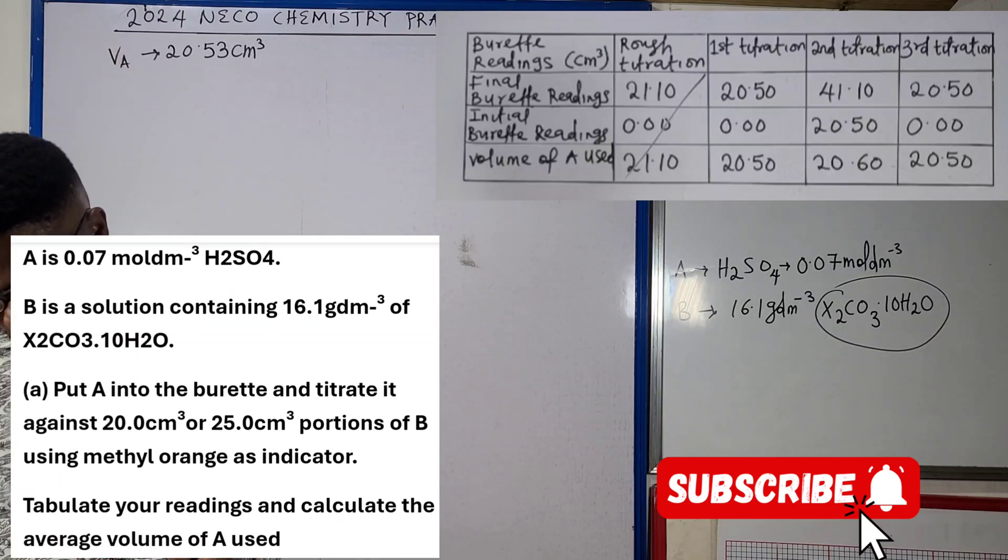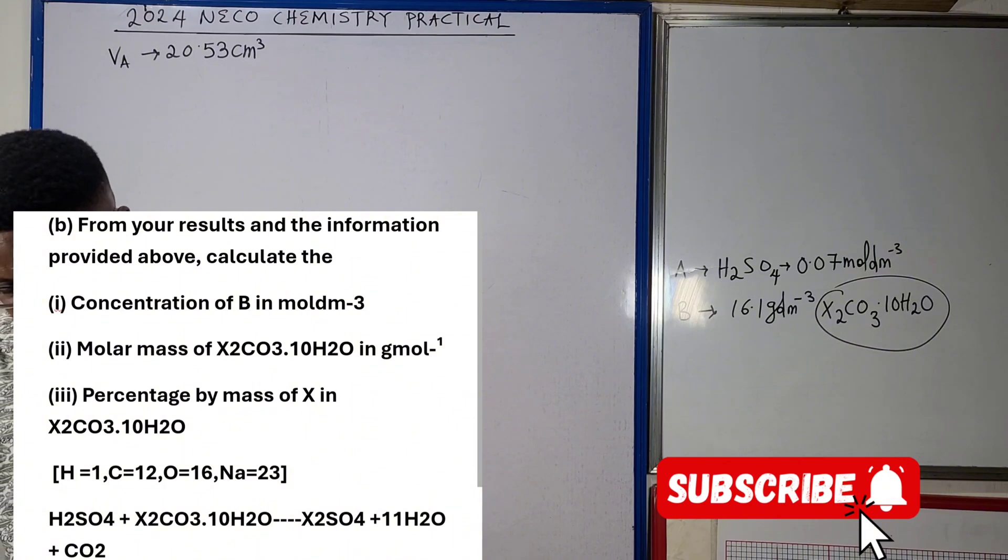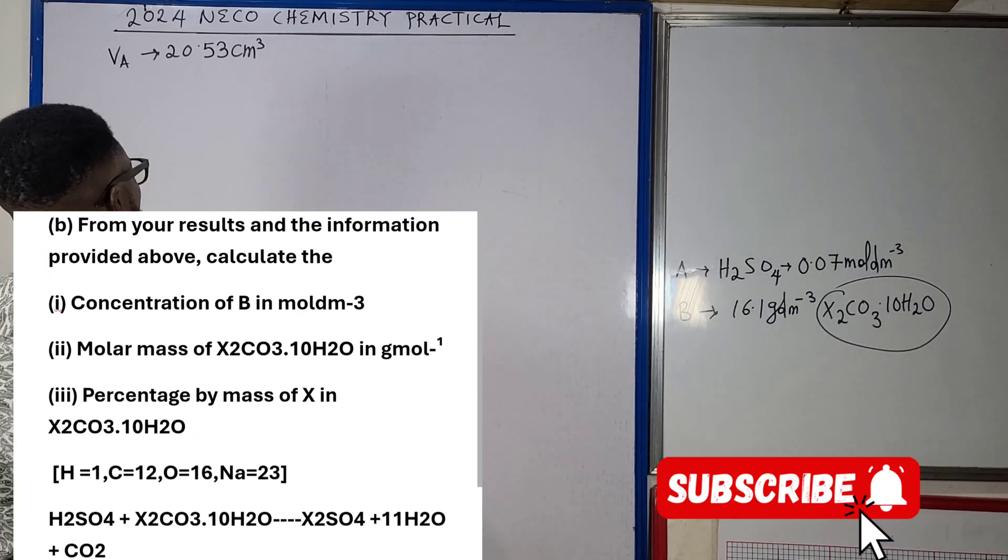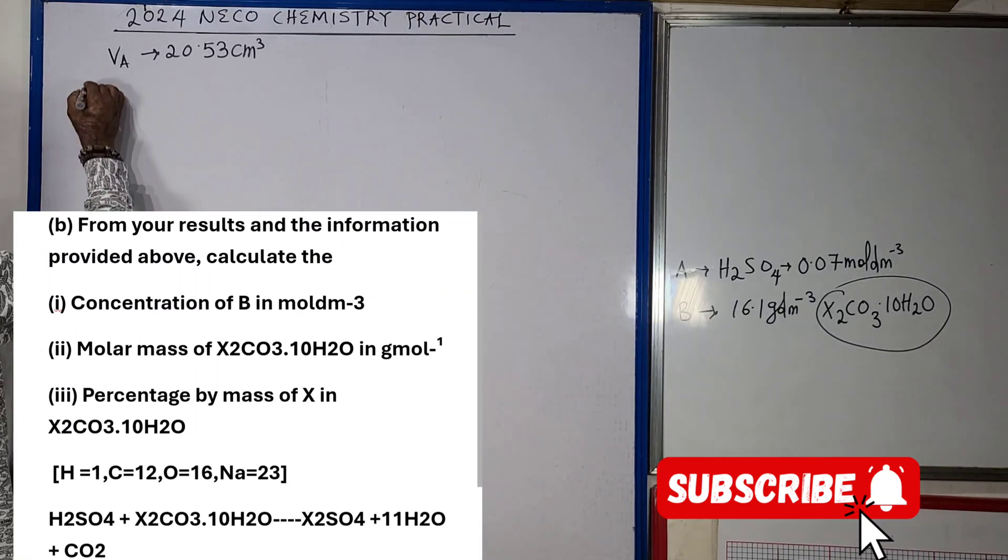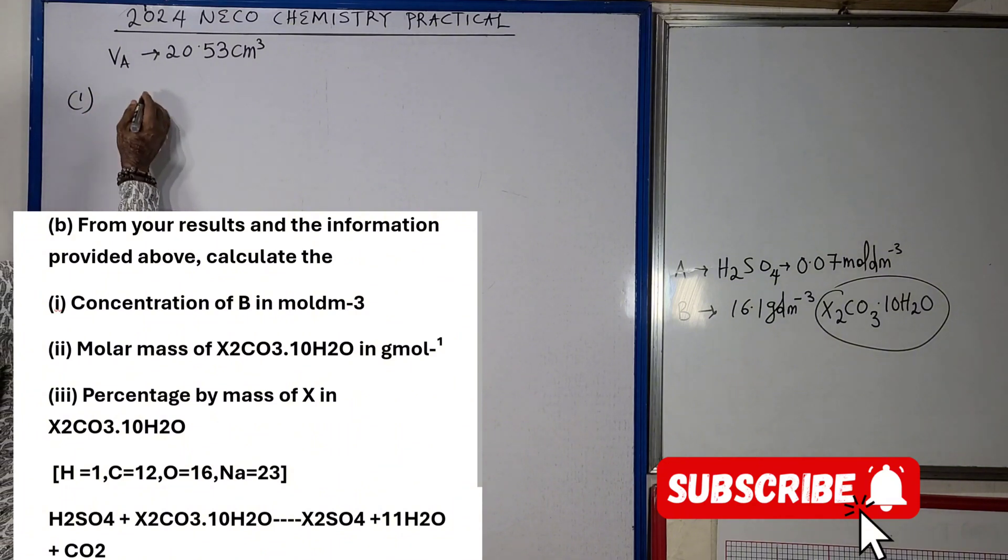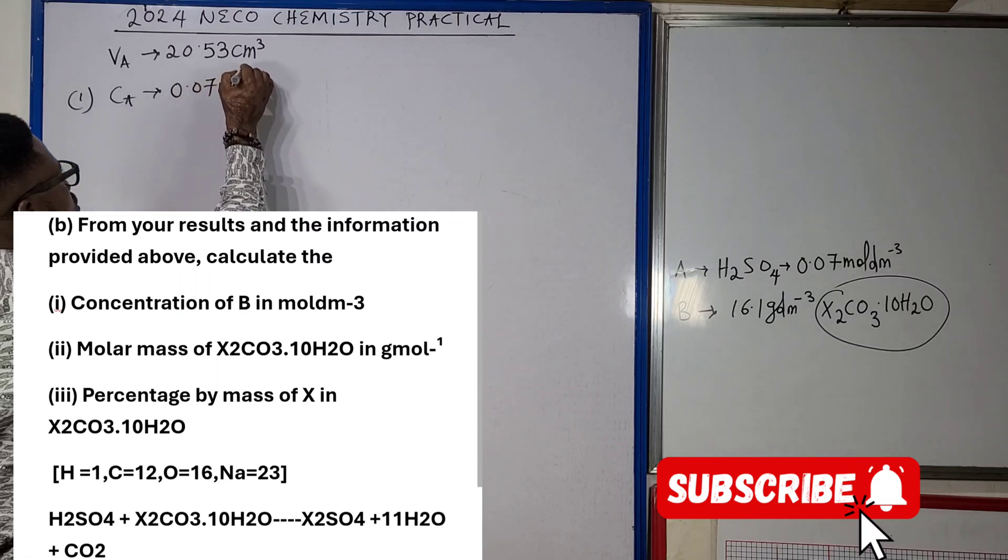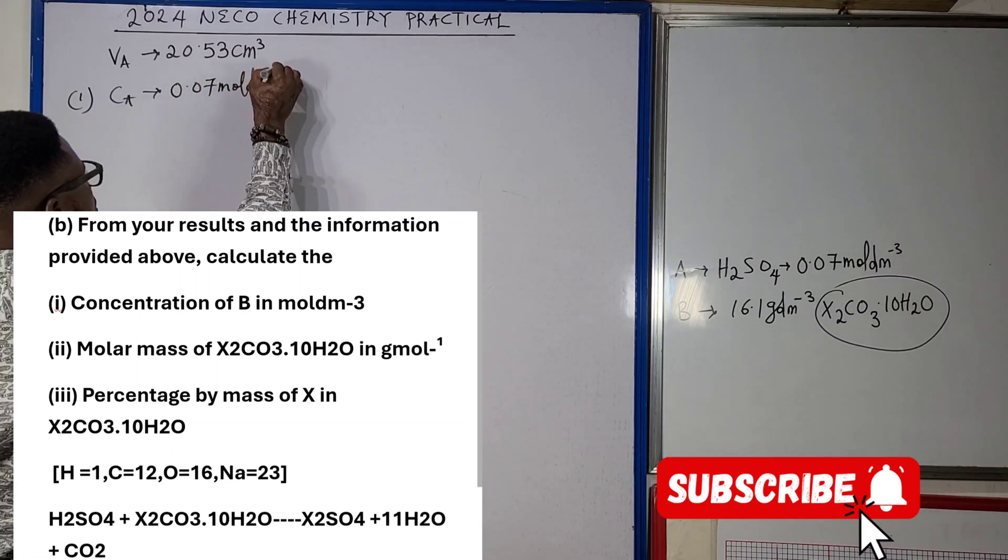So that way we've been able to perform all of A. As you can see in the question on your screen, we have dealt with everything that has to do with A. Now question B states that from your results and the information provided, calculate the concentration of B in mole per dm³.